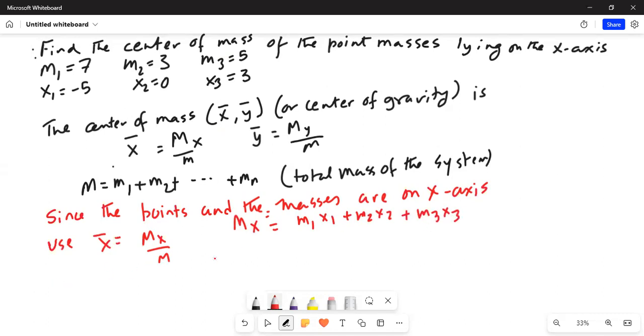So x-bar becomes equal to m1 is 7 times minus 5 plus m2 is 3 times 0 plus m3 is 5 times 3 divided by m1 plus m2 plus m3, which is 7 plus 3 plus 5. So this is equal to minus 35 plus 35 divided by 15.